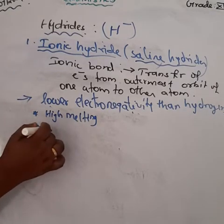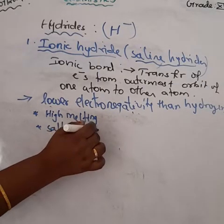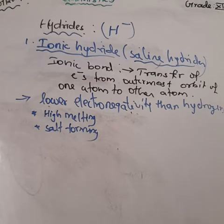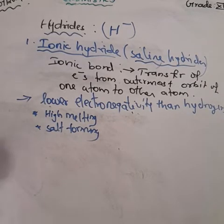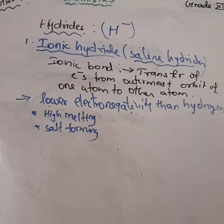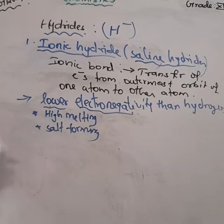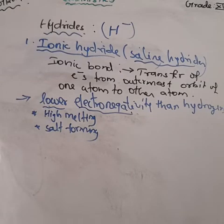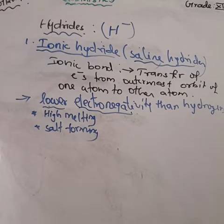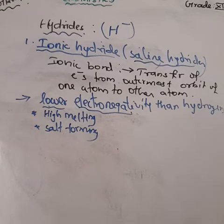Ionic hydrides are formed between electropositive elements — elements with electronegativity lower than that of hydrogen — combined with the hydrogen atom. Alkali metals and alkaline earth metals are the most electropositive because they can easily transfer electrons from their outermost orbits.